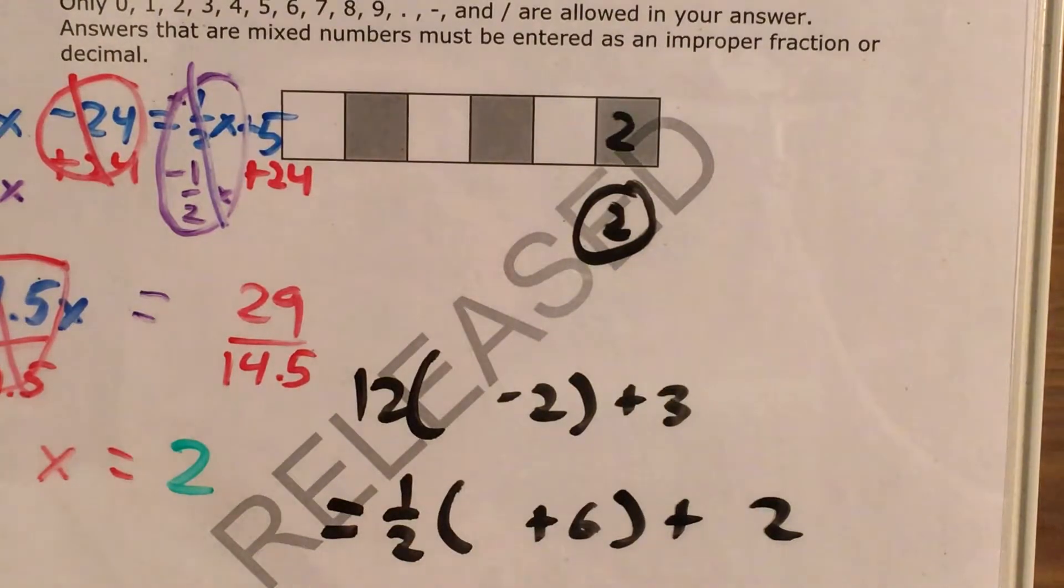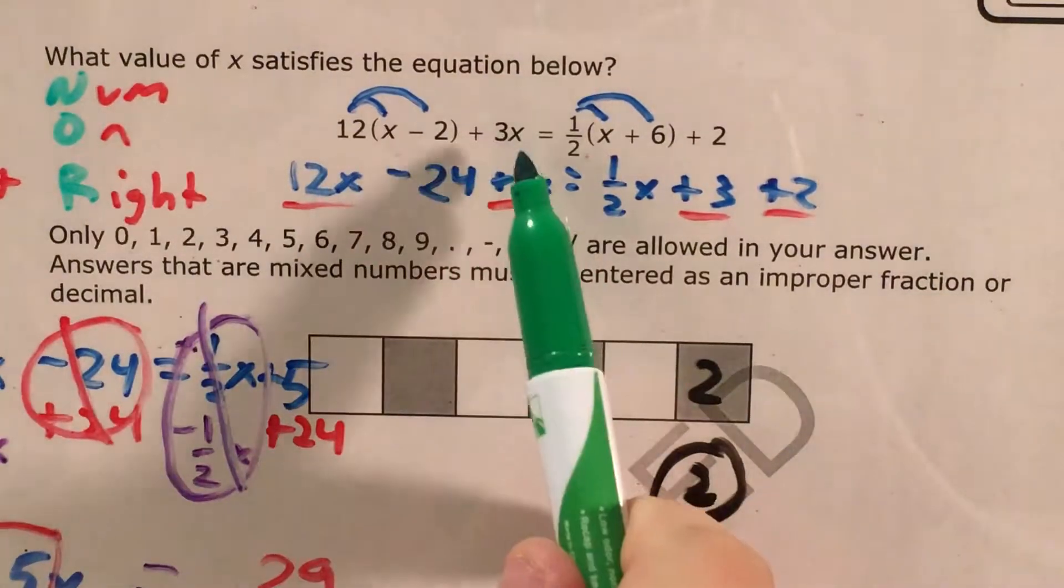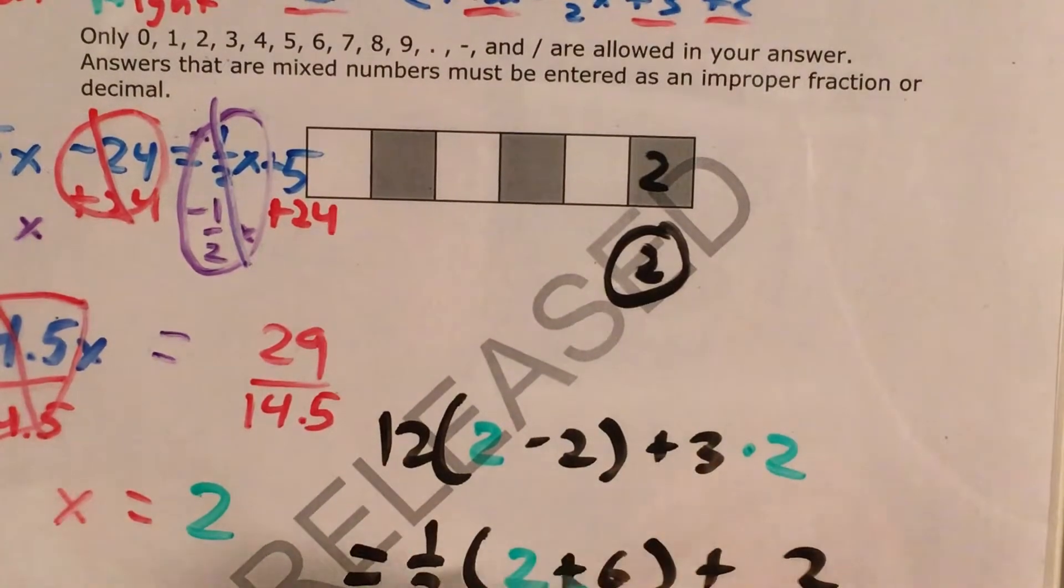The way I'm going to do that is here's my original equation with everything written in except for x. Because what I'm going to do is I'm going to plug in 2 for x, figure out what both sides of this equation get me and make sure that they're equal. Because in order for this answer to work both sides of this have to be equal.